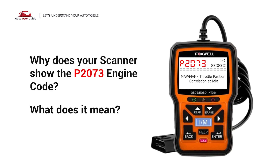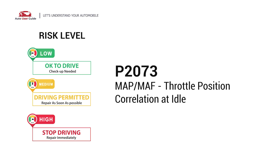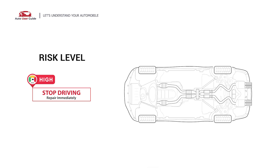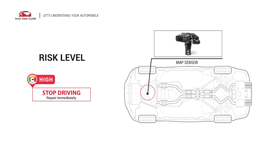Why does your scanner show the P2073 engine code? What does it mean? P2073 is a diagnostic trouble code for MAP or MAF throttle position correlation at idle. It indicates the PCM detects a discrepancy between the calculated throttle position and the readings from the manifold absolute pressure or mass airflow sensor. Under this circumstance, stop driving and repair your vehicle immediately.